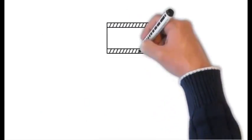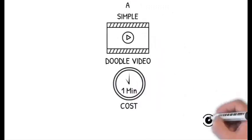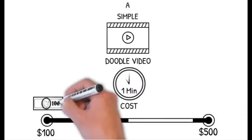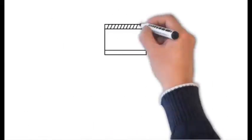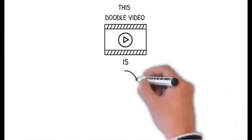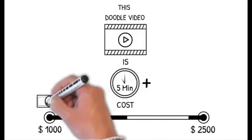In fact, getting a simple one minute doodle video costs anywhere from 200 to 500 dollars per minute to get it made. And let's face it, no video is just one minute long. This one you're watching right now is a hair over five minutes long. So it cost him anywhere from a thousand to twenty five hundred dollars to get made.